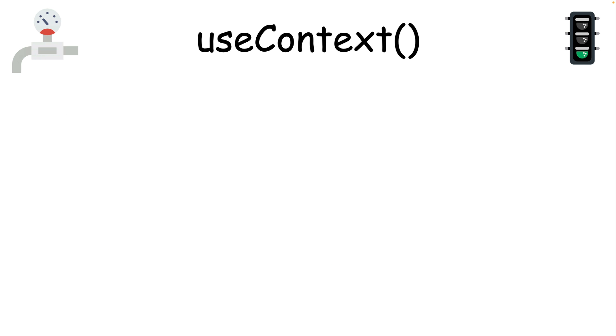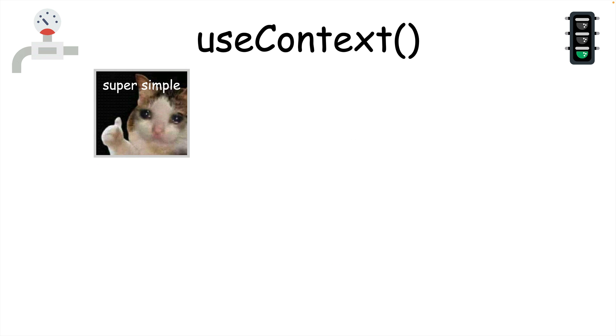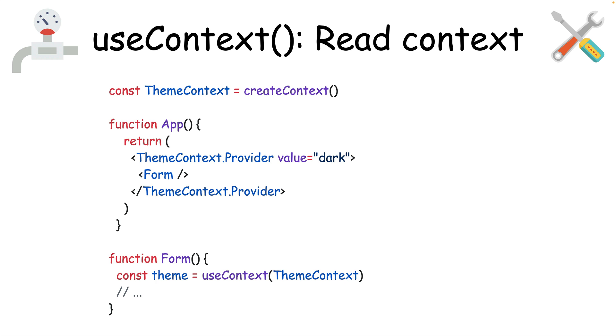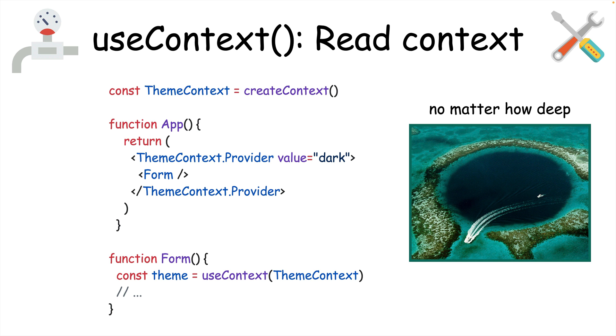There's one context hook called useContext, and it's really pretty simple. It can read context values, which means if a component is wrapped in a context provider, you can use this hook to read the value passed down on context. useContext works in any component that's nested inside a provider, no matter how deep it is.